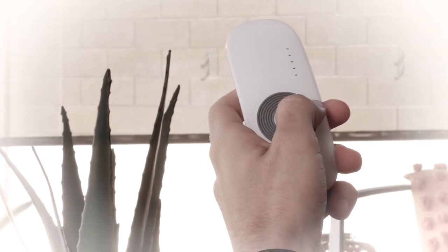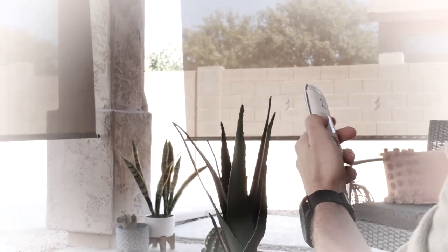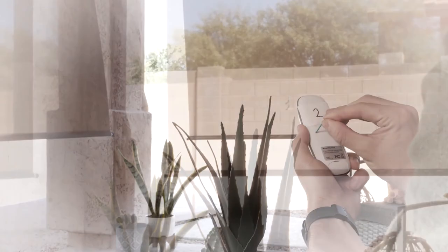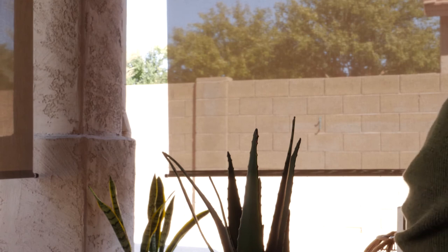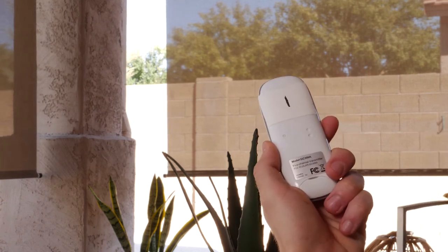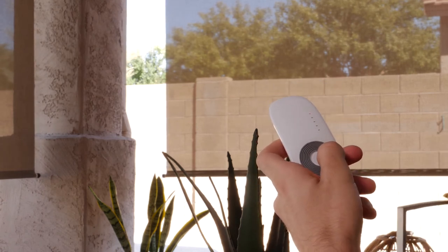However, use the remote included with each individual shade as your secondary remote. You should now be able to control your primary shade on channel 1 and your secondary shade on channel 2 of your primary remote.